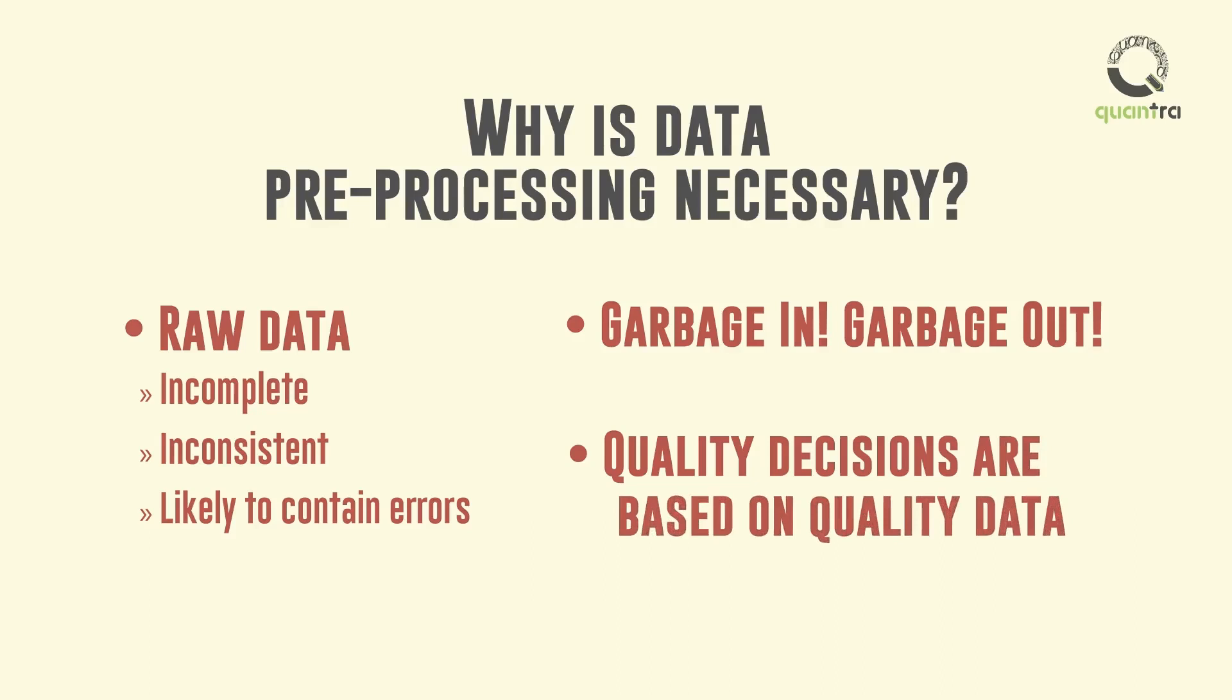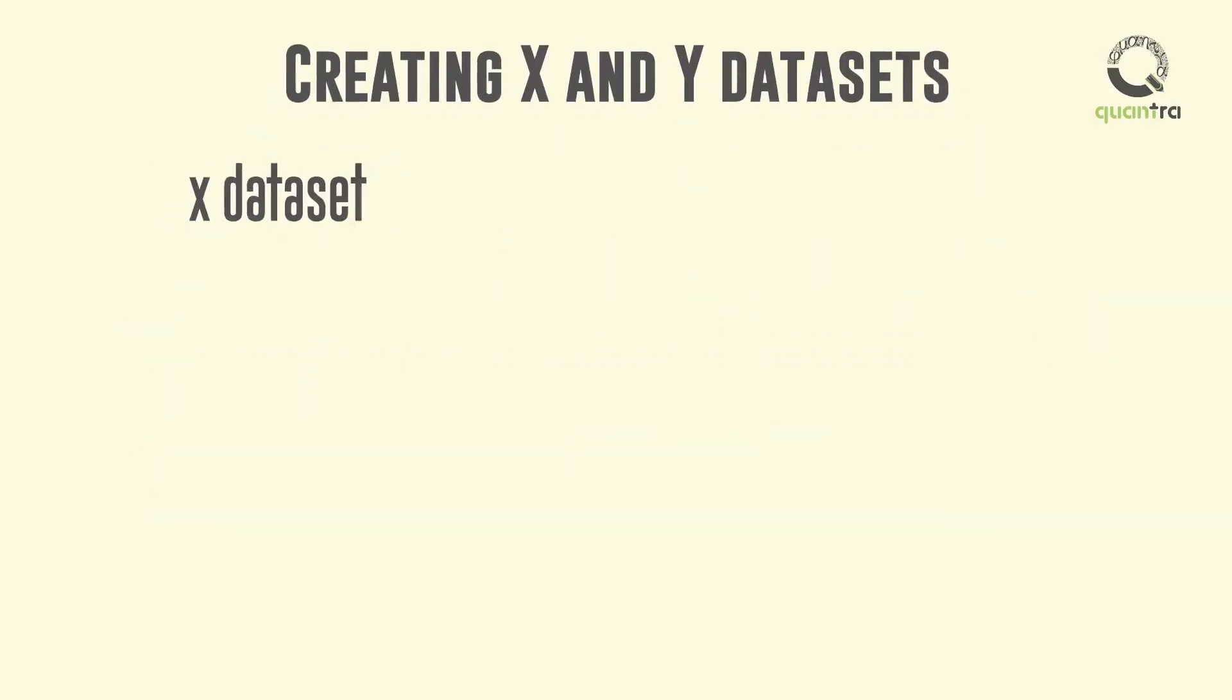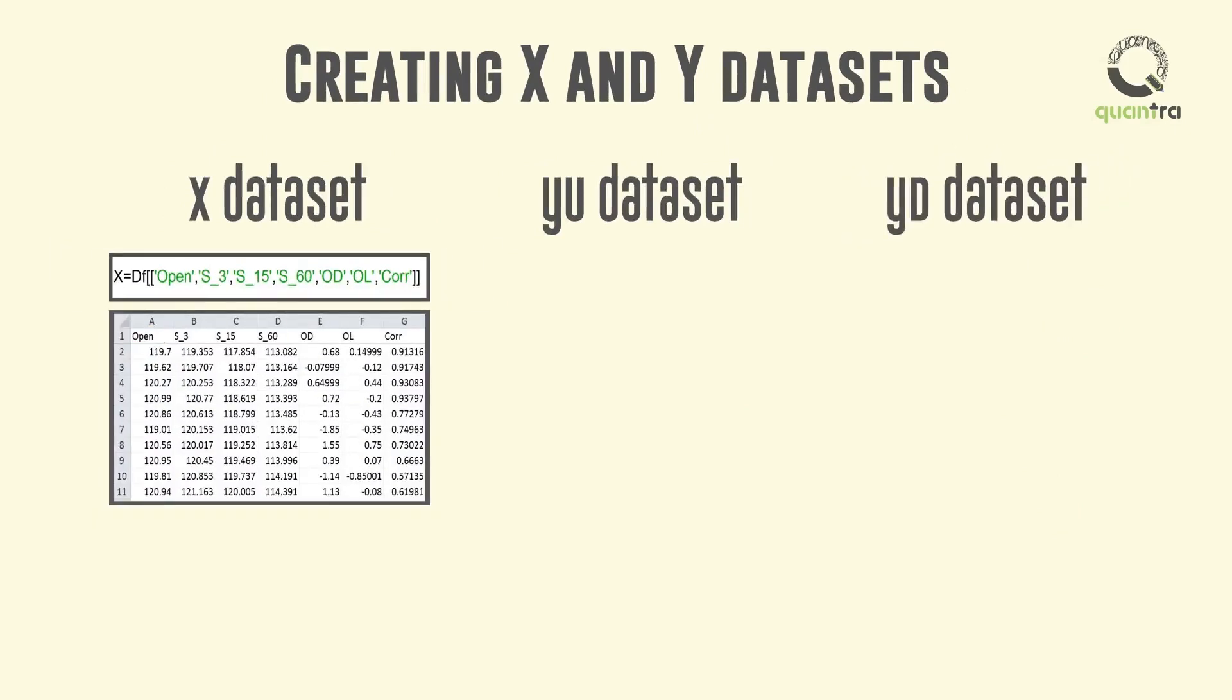Before we start with pre-processing the fetched data, we create three new datasets: X, YU, and YD. X contains the open price, three moving averages, and it also stores entries in the columns OD, OL, and CORE from the data frame DF.